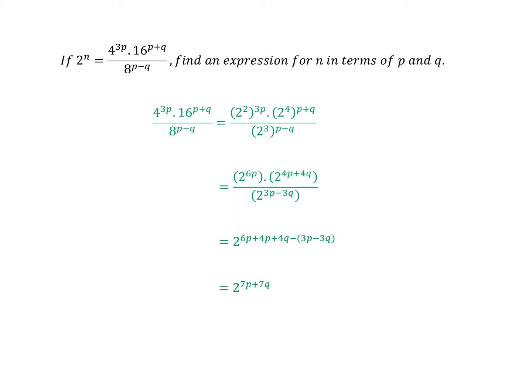As we normally do, go back to the question, look to see what the question's asking us to do. Find an expression for n in terms of P and Q. Well, we haven't actually done that yet. So what we can now do is say that 2 to the power n is equal to 2 to the power 7P plus 7Q. And then finally we can write down the answer to the question.